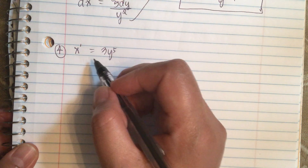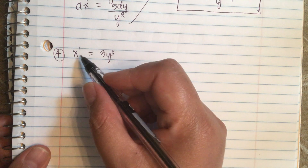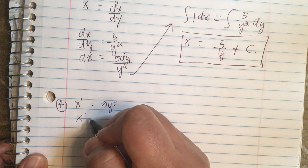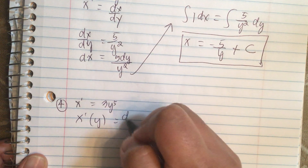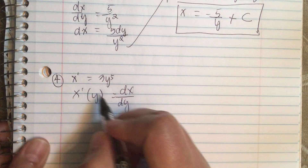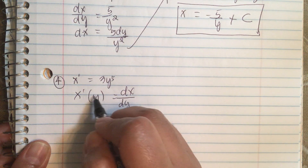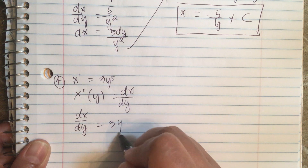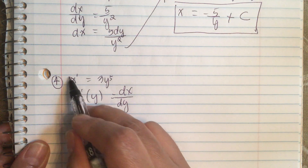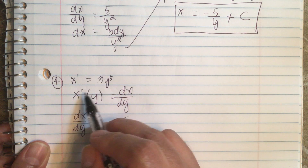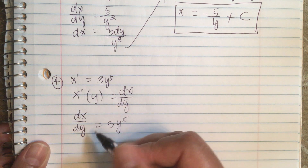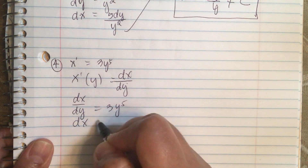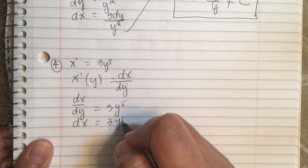Now x prime is equal to 3y to the pif. So we can transform it again: x prime of y is equal to dx over dy. So we can rewrite this as dx over dy is equal to 3y to the pif, replacing the original expression.